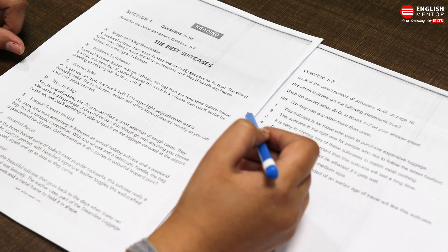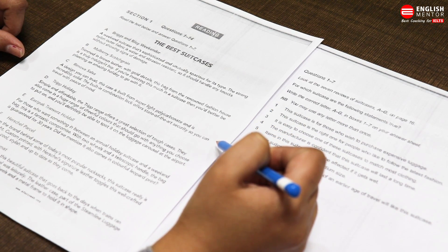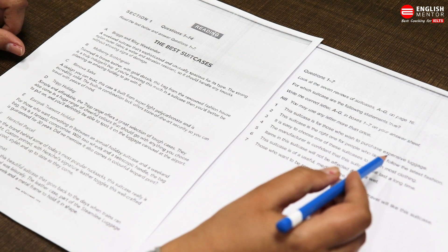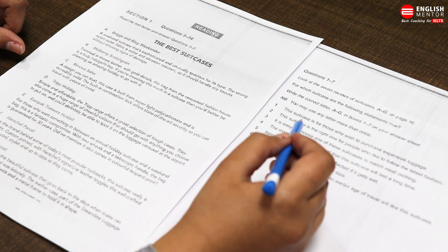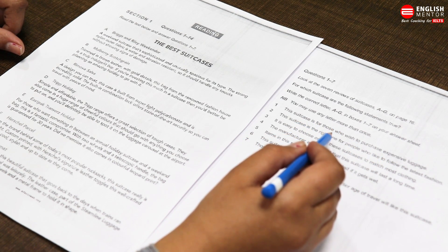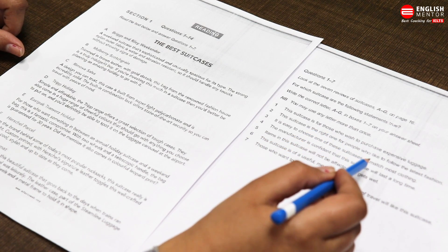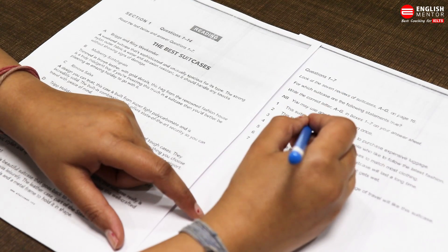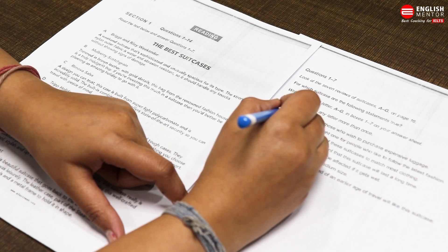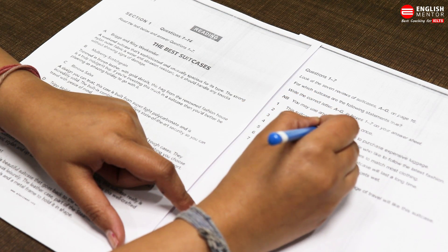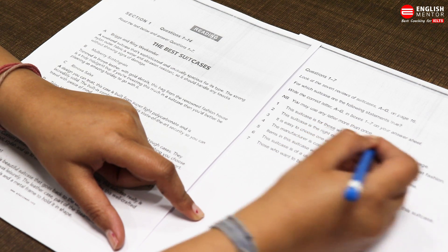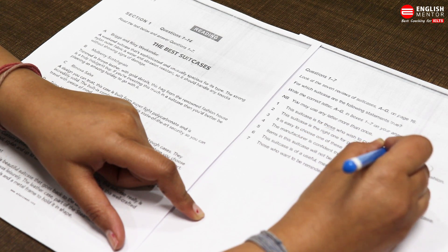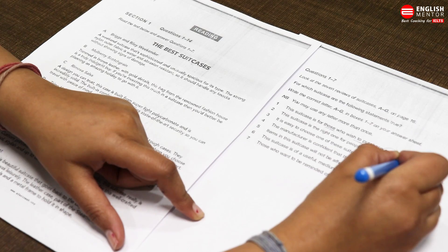You may use any letter more than once. This means that you don't have to write exactly the name of suitcases, you have to highlight that this is for A suitcase or B suitcase. Question one: this suitcase is for those who wish to purchase expensive luggage, costly luggage.